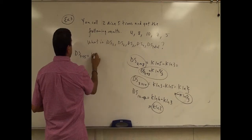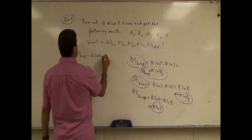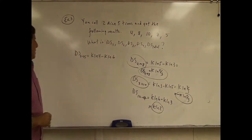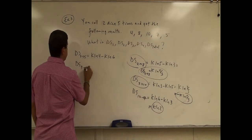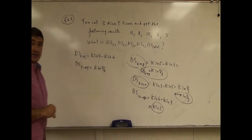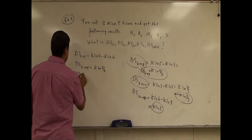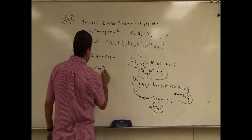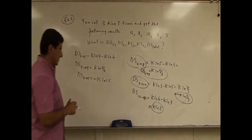For five, the entropy is kln(4); for seven, the entropy is kln(6). So delta S from seven to five is going to be kln(4/6), or I can write it as negative kln(6/4). So delta S seven to five equals negative kln(6/4), which is negative kln(3/2).